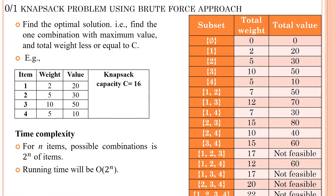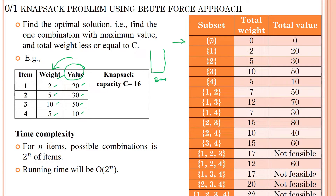Here the knapsack has a capacity of 16, and the weights for items 1, 2, 3, 4 are given as 2, 5, 10, 5 respectively. The value (discount) for each item is also given. We have to find which combination gives the best discount — the most profit when selecting items. We start with an empty bag, so total weight is 0 and total profit is also 0.